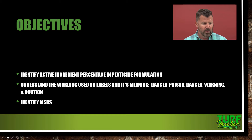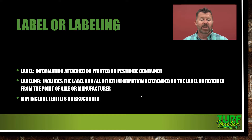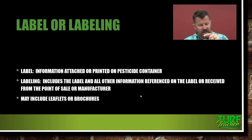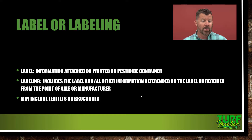Label or labeling: the label is the information that is attached or printed on a pesticide container. It is the sticky-back part glued to the container — it has a little sticky strip down the side, you can pull it back, and inside there is a lot of information. Your labeling, on the other hand, can be anything the dealer gives you when you purchase a pesticide. It's stuff you download on the Internet, any pamphlet or information you pick up from a cooperative extension agent. Labeling is information referenced on a label or received from the point of sale or the manufacturer — but remember, the label is attached to the container.